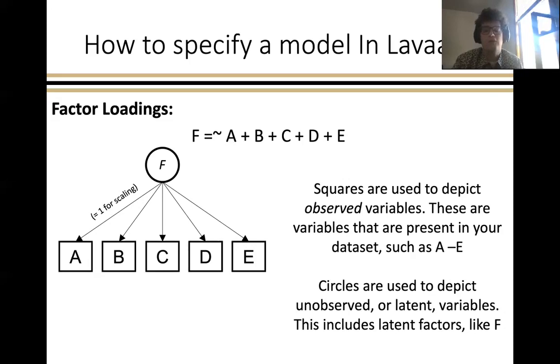And as another note, just in general in structural equation modeling, squares are used to depict observed variables such as the variables here for a through e, and circles are used to depict unobserved or what is often referred to as latent variables, and that can include latent factors like the latent factor f over here, or for example the residual variances of observed variables, where the observed variable is something that is observed in your data set and the residual variance is not, and so for that reason is generally depicted as a circle.